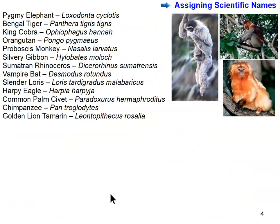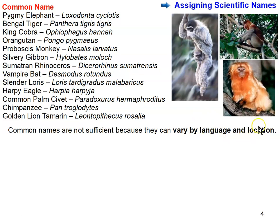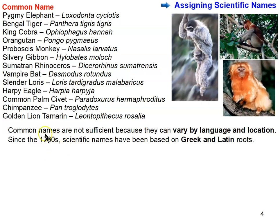One part of taxonomy is naming species. Carolus Linnaeus was the father of taxonomy — he came up with both the classification system and the naming system. Common names are insufficient because they vary by language and location. We need a naming system used across all languages and all over the planet — so that everyone knows, for example, that 'Loxodonta cyclotis' refers to a pygmy elephant, regardless of what they call it in their language.